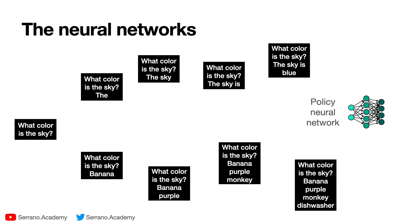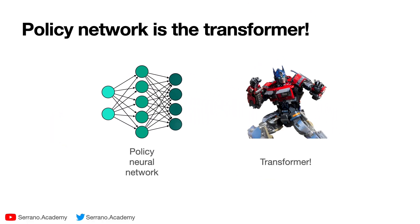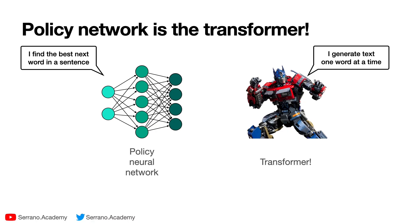And what about the policy neural network? Well, the policy neural network is learning these probabilities, the probabilities of going between a sentence and the sentence with an extra word. Does that sound familiar? Well, that's exactly what the transformer does. So the policy neural network is the transformer because the transformer generates text one word at a time. Given a piece of text, it finds the next word that has the highest probability of belonging there. That's exactly what the policy neural network does: it finds the best next word in a sentence. So these value and policy neural networks are a disguise for the human evaluator, or at least a neural network that mimics the human evaluator, and the actual transformer that we're learning.